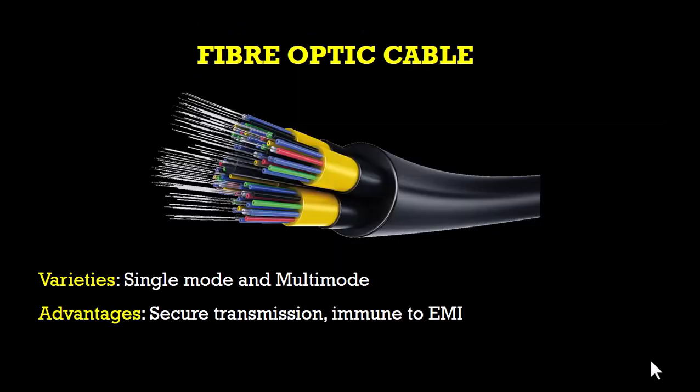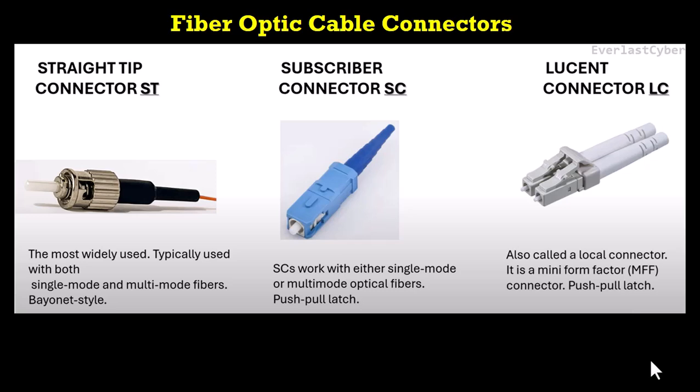The next cable is the fiber optic cable, which is used to transmit data as light signals, thereby providing high speed data transmission over long distances. There are two types of fiber: single mode fiber and multi-mode fiber. The fiber optic cable is used for backbone networks, long distance telecommunication, and high speed data communication. It uses connectors like the straight tip connector (ST), the subscriber connector (SC), and the Lucent connector (LC).